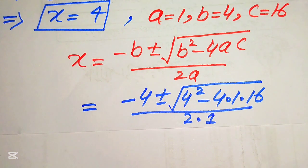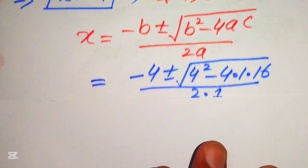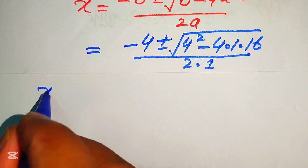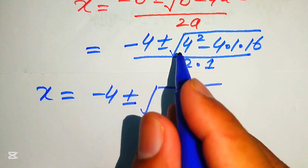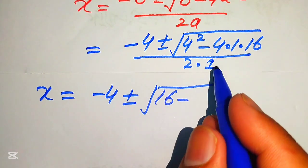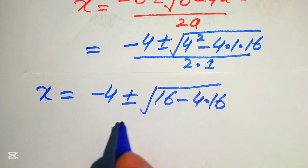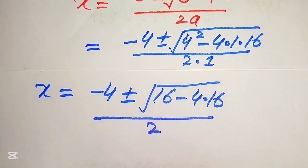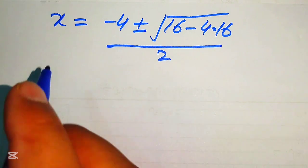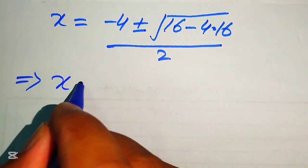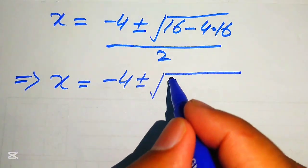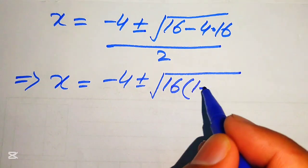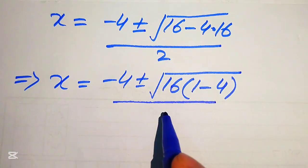We substitute the values of a, b, and c and now simplify. We have x equals minus 4 plus or minus the square root of — 4 squared is 16 minus 4 multiplied by 16 — divided by 2 times 1 equals 2. Further, in the next step x equals minus 4 plus or minus the square root of 16 times 1 minus 4, divided by 2.